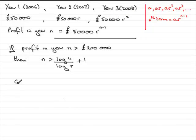Now, in this part then, we're given that R is 1.09 and asked to find the first year that the profit exceeds £200,000.